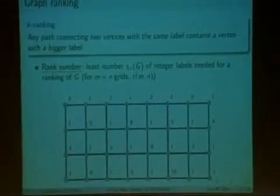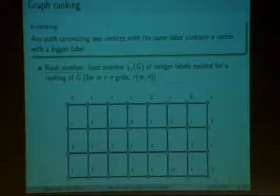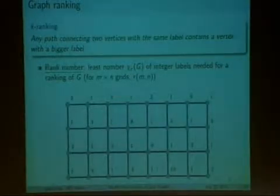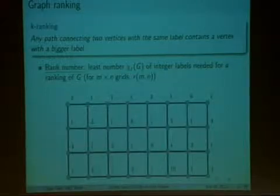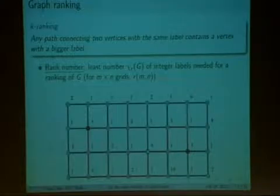Now graph ranking, rather than labeling the vertices with colors, will label the vertices with different integer labels so that between any two vertices with the same label, each path will contain a vertex with a bigger label. So for example, if we take this 4 by 8 graph, you can see that if we connect any two vertices with the same label with any path, it will always contain a bigger number.